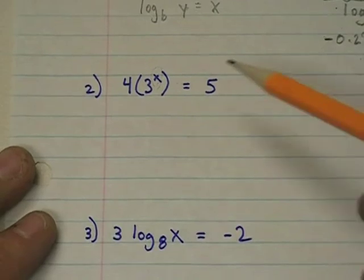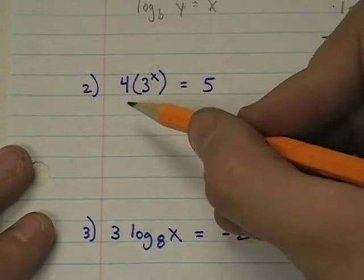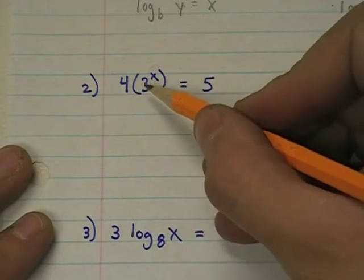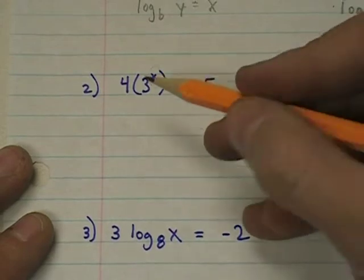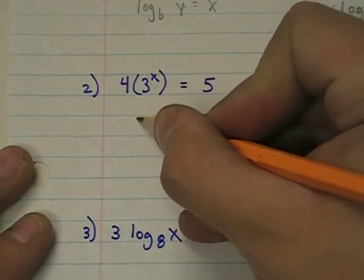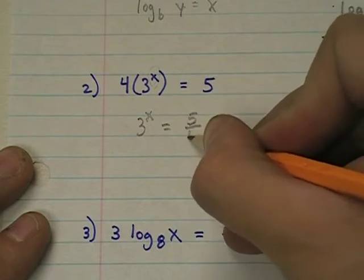Second equation, same thing, we've got an exponential equation, we've got to convert this to a logarithm, and I'll do that right here. But before we do that, we've got to get rid of this pesky 4. Well, how do we do that? Well, we divide by it. So I get 3 to the x power equals 5 fourths.